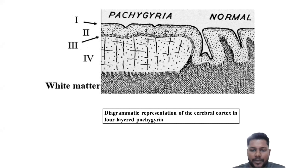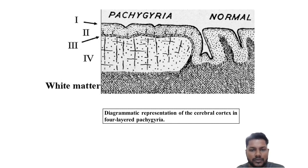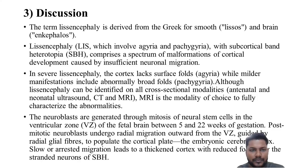This is a diagrammatic representation of the cerebral cortex in a four-layer pachygyria pattern. In the normal brain, layers 1, 2, 3, and 4 are arranged normally. In the pachygyria pattern, this is the arrangement as seen in the discussion.